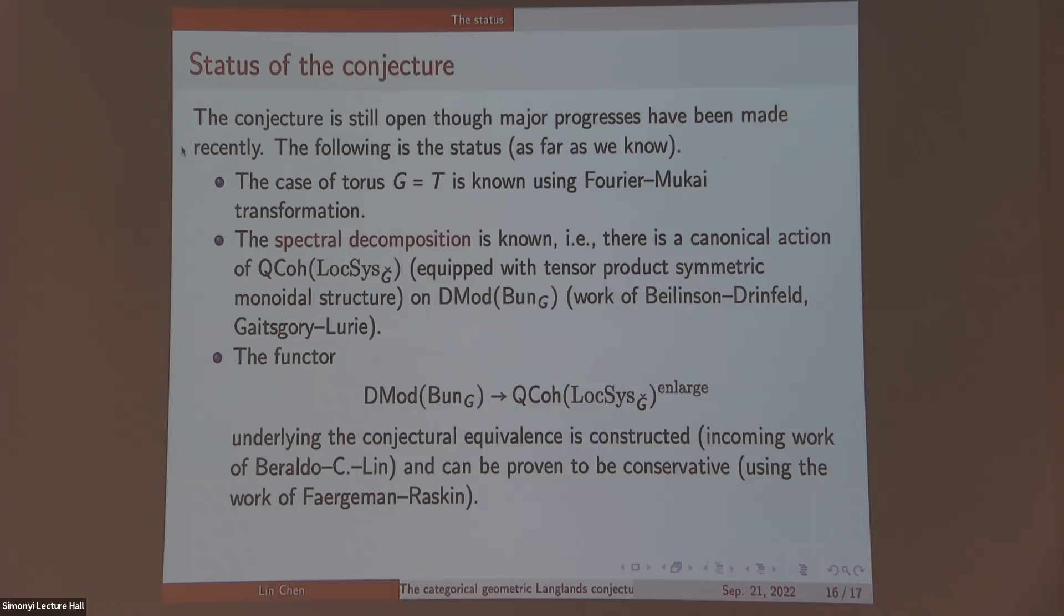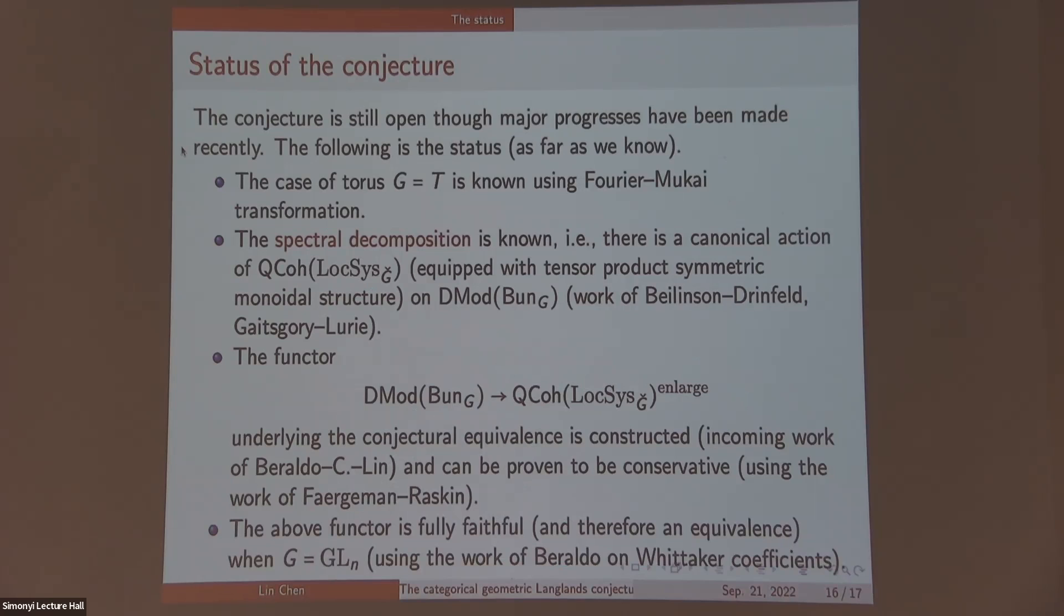And moreover, we know that when G equals GL_n or PGL_n, this functor is fully faithful. This is due to some old work of Beraldo on Whittaker coefficients. So in particular, since it's conservative and since it's fully faithful, you know that it's an equivalence. So maybe it's safe to say that the categorical Langlands is known for GL_n, although it's not written down. But the remaining thing to prove is to prove fully faithful for general G, but it's still open because that proof used metabolic subgroups, which is special to GL_n.